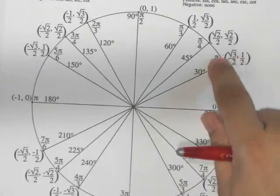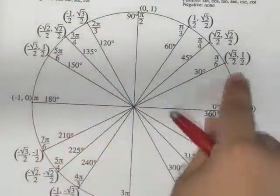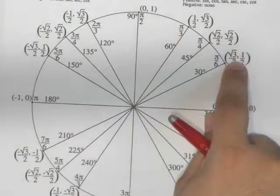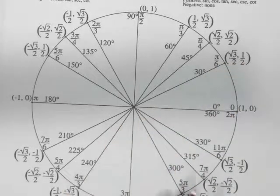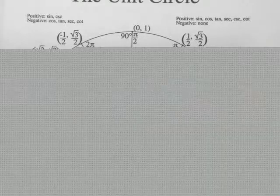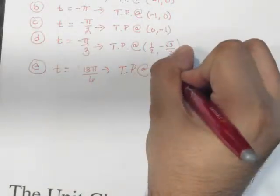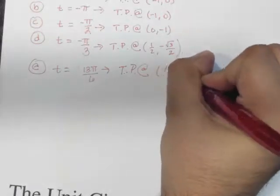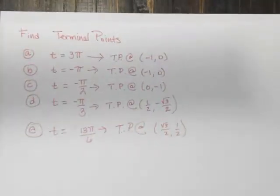So notice you just kind of have to keep counting by 6. Okay, so this one would actually be our 13π out of 6 if it were actually printed on the circle. So our terminal point for that one would be this square root of 3 over 2 and 1 half. So definitely some good examples of terminal points using the unit circle. It's really just that easy.